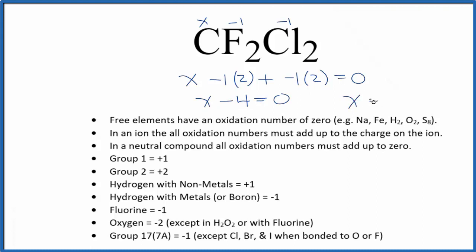So X is going to equal a positive four. So the oxidation number on the carbon in CF2Cl2, dichlorodifluoromethane, is going to be positive four. And if you add these up, we have two times negative one, two times negative one, so that's negative four, positive four, and it all adds up to zero.